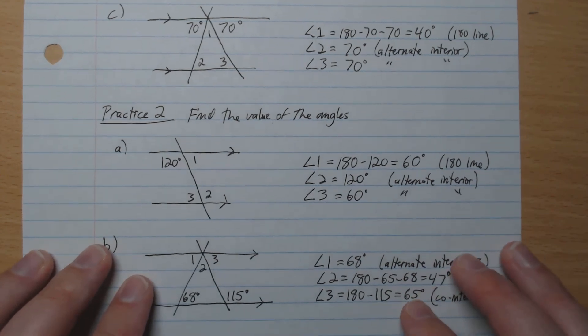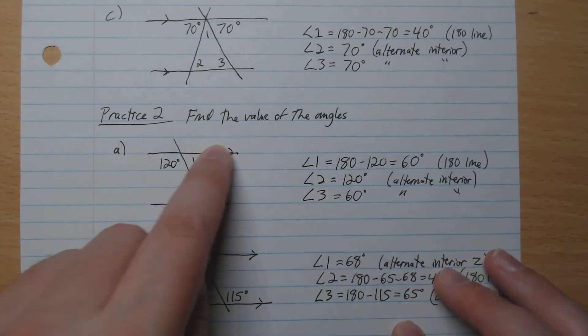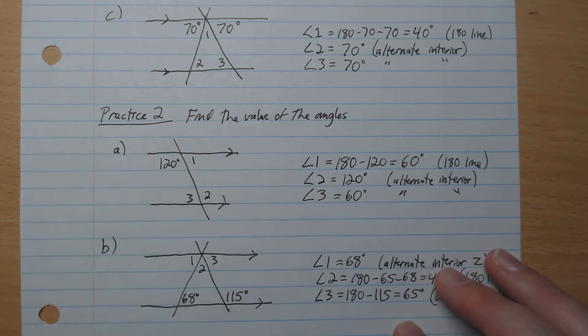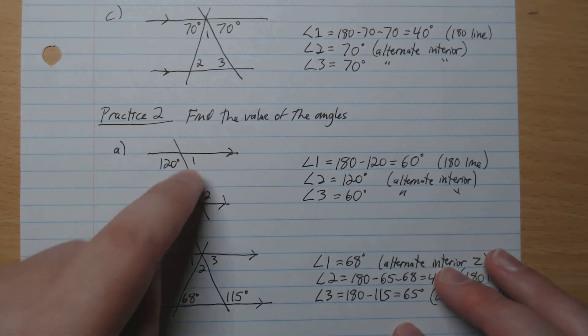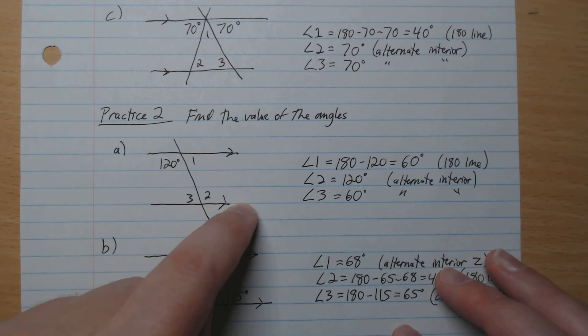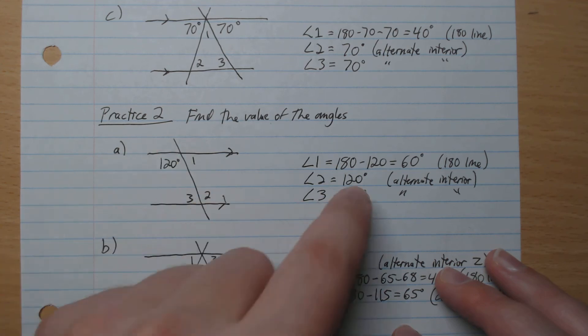Okay, we're back. So what do we have? 180 on the line. So 180 minus 120 gives 60. So angle 1 is 60. Angles 3 and 1 are the same from alternate interior. 120 is also alternate interior. So angle 2 and 120 are the same.